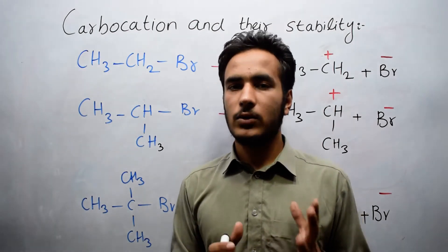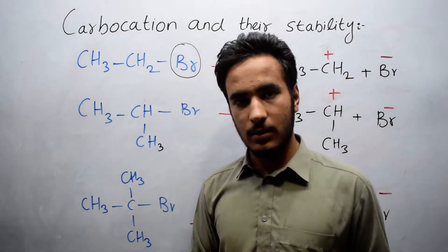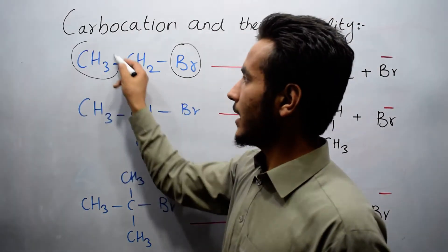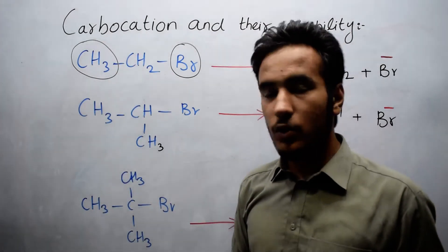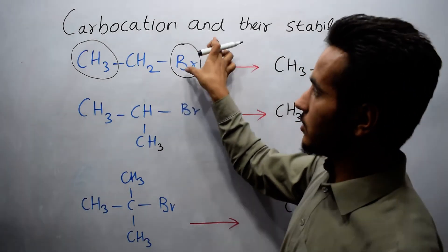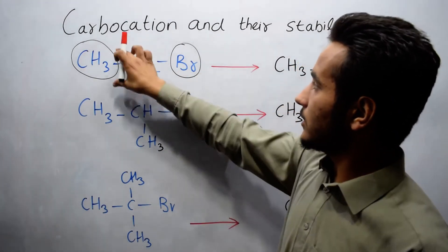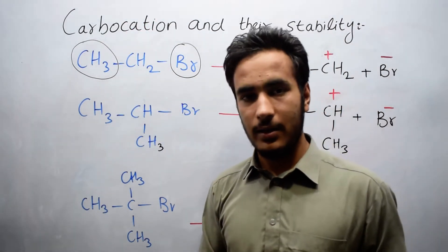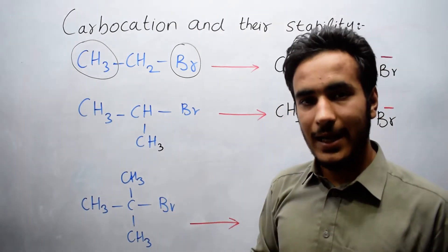Primary alkyl halides are those in which the halogen is attached to a primary carbon — a carbon which is attached to only one alkyl group. When bromine is attached to a primary carbon, it is known as a primary alkyl halide. If an ion is produced from a primary alkyl halide, it is known as a primary carbocation.